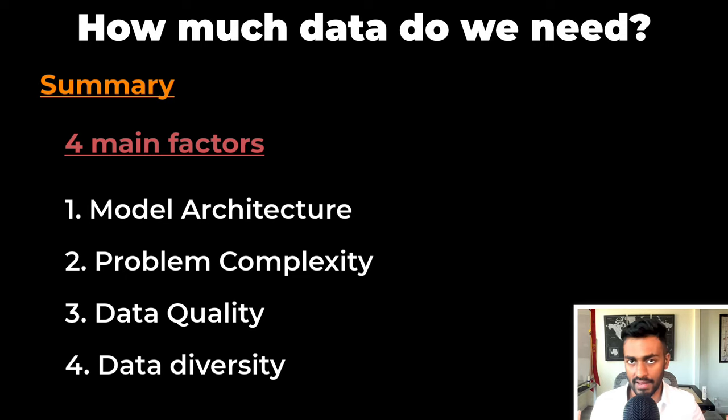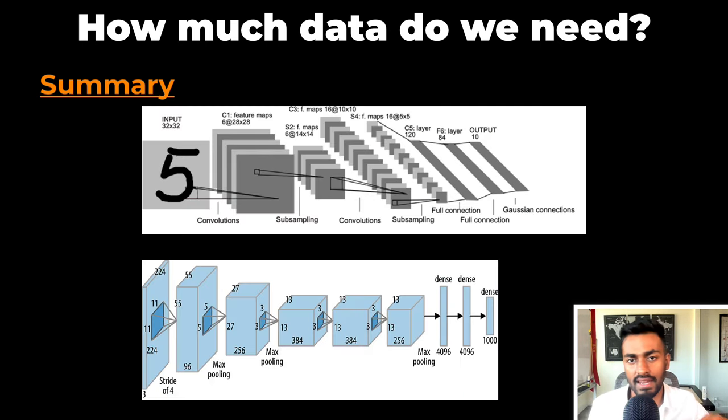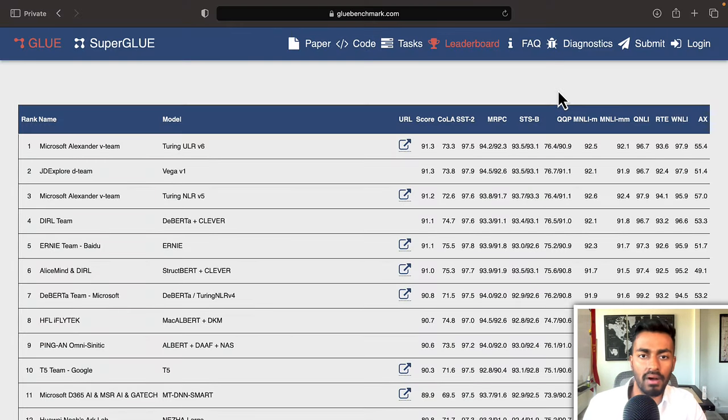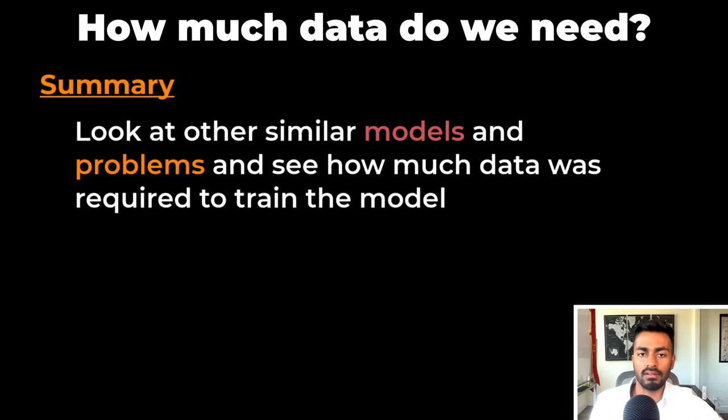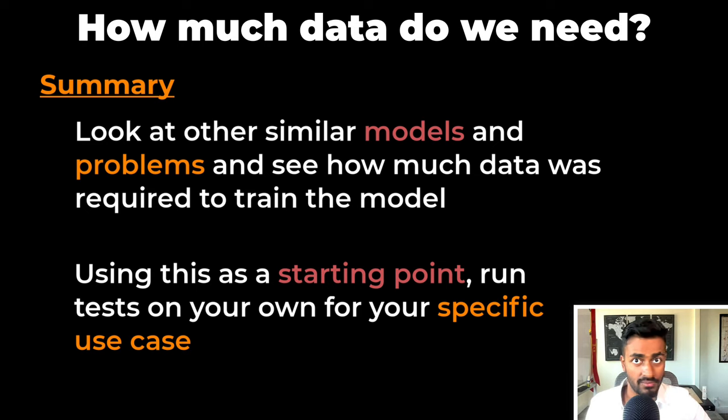How much training data does a neural network need? This depends on four main factors, but there are many others. The first is model architecture complexity, then problem complexity, then data quality, and data diversity. We can see how complicated answering this question can be when looking at computer vision models, or even the models on the GLUE benchmark. Overall, to determine how much data you need for your problem, you need to look at other similar problems and models and see how much data was required for training there. And using that as a starting point, you can run tests on your own for your specific use case.